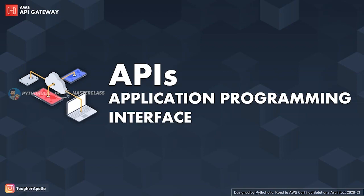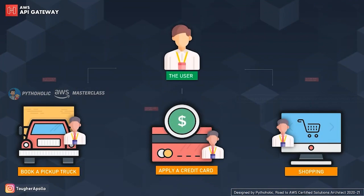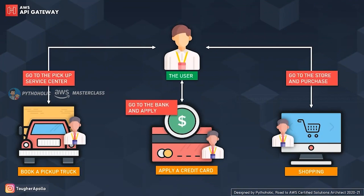Let's together understand what an API is by going back to the days when everything was simple and you were in charge of doing things manually without technology. For example, if you wanted to book a pickup truck, you would go to the pickup agency and talk to the service provider. If you needed to apply for a credit card, you would go to the bank and fill out an application form. If you wanted shoes or clothes, you would hop to the nearest shopping center.